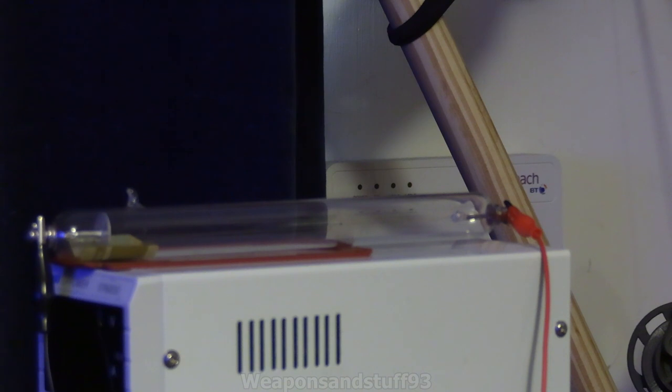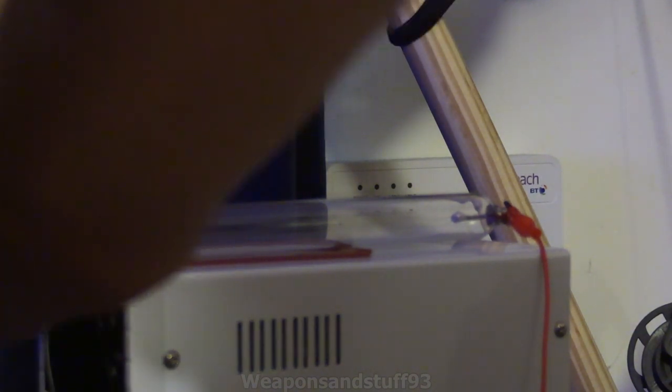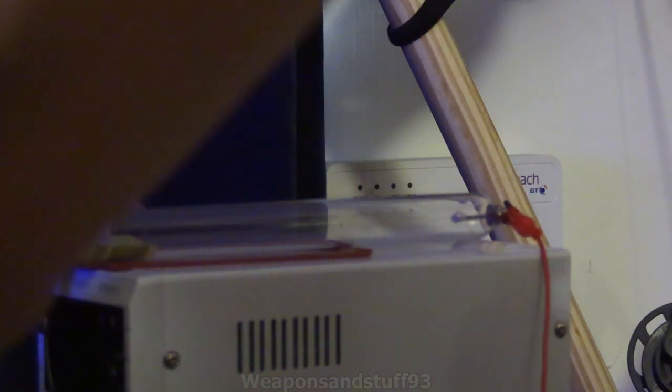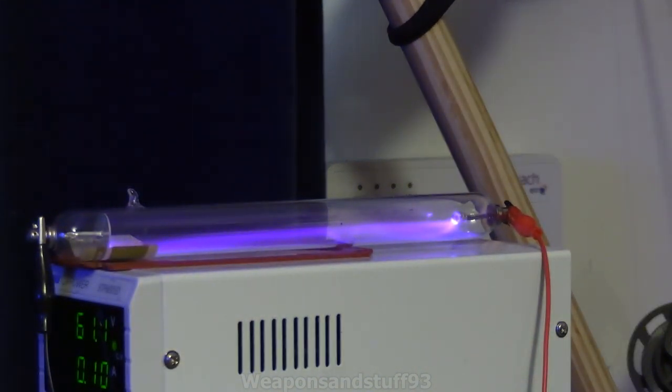So what I've got there is the Crookes tube, you've probably seen that before, and I'm going to run this with a step-up transformer. So let's just flick that on, and you should then see, there we go, a lovely purple beam that probably looks quite blue on the camera. Shooting through, it's even more impressive with the light off.